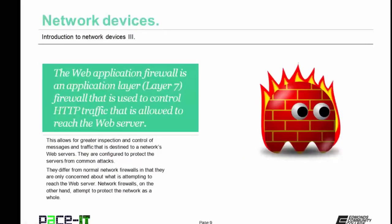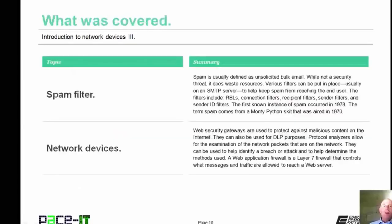The web application firewall is an application layer, or layer 7, firewall used to control HTTP traffic allowed to reach the web server. This allows for greater inspection and control of messages and traffic destined to a network's web servers. They are configured to protect the servers from common attacks. They differ from normal network firewalls in that they are only concerned about what is attempting to reach the web server, whereas network firewalls attempt to protect the network as a whole. This means the web application firewall is much more specialized and allows for more granular control. That concludes this session on the introduction to network devices part 3.